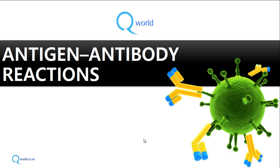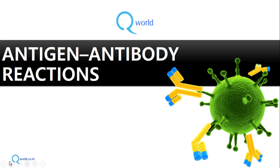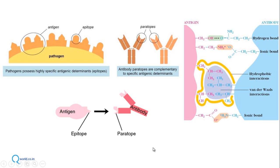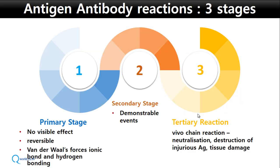Welcome to the session on antigen-antibody reactions. Pathogens possess highly specific antigenic determinants on their surface, known as epitopes. Antibodies have complementary regions against these antigenic determinants, known as paratopes. Antigens have epitopes and antibodies have paratopes, which react with each other — the epitope of antigen binds with the paratope of antibody, creating antigen-antibody reactions.